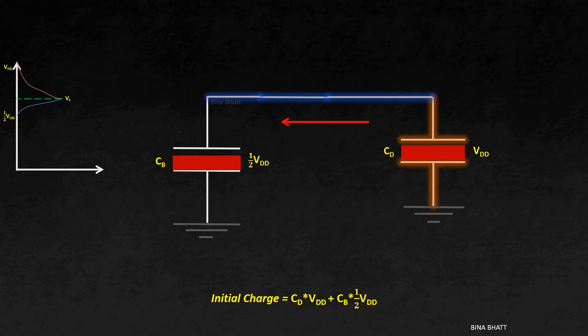Thus, charge sharing process continues until the time the voltage becomes the same or equal on both the sides. The final charge of the circuit can be given as CD plus CV times VF, where VF is the final voltage, which is the same on both the sides. Now, let's quickly grab a pen and paper to figure out the values of final voltage and increase in voltage.